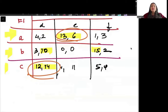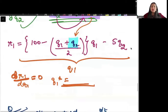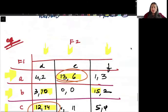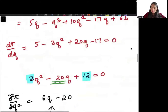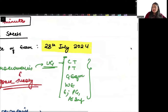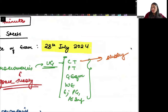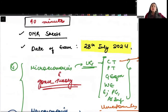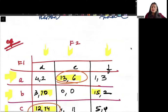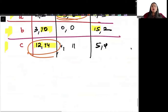You need to do forms of market very well — monopoly, monopolistic competition, oligopoly, and monopsony. Within consumer theory, make sure you revise the Slutsky equation and uncertainty. In uncertainty, revise what risk-averse and risk-loving individuals are and how to find the certainty equivalent, as that can be asked in the exam.